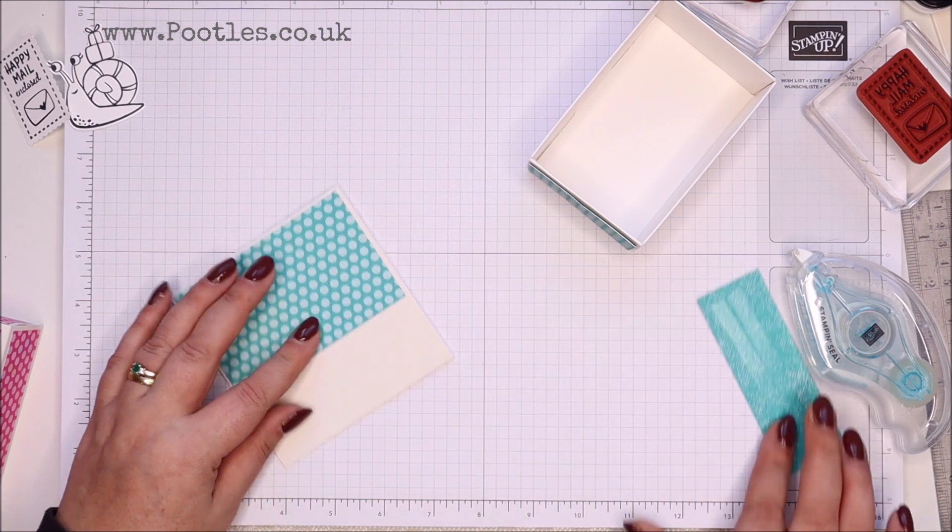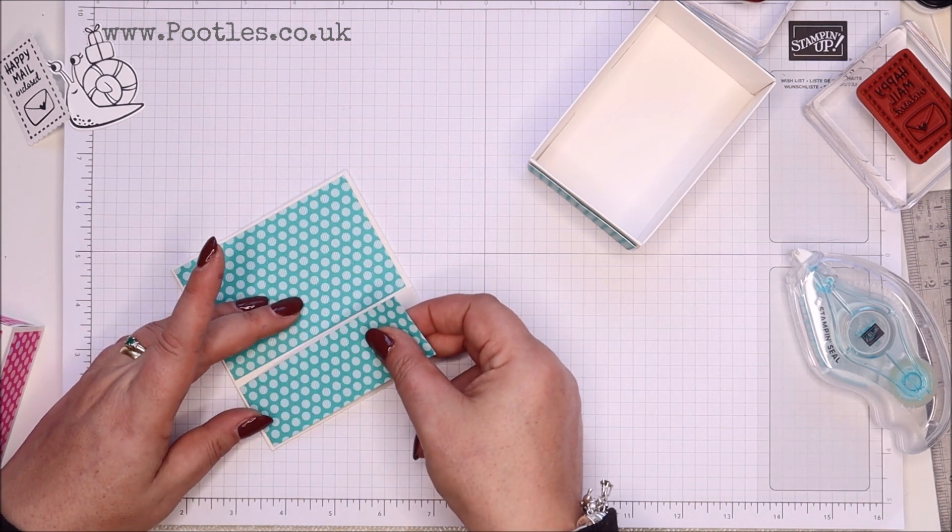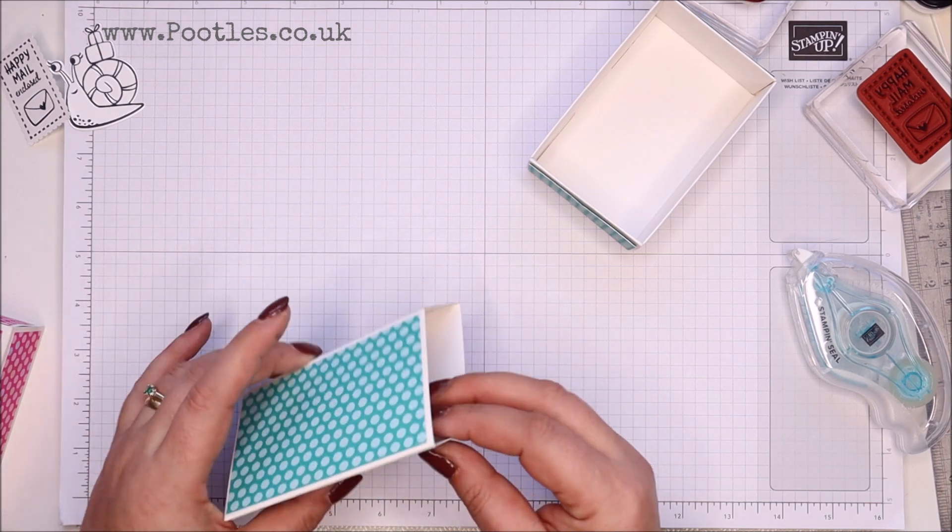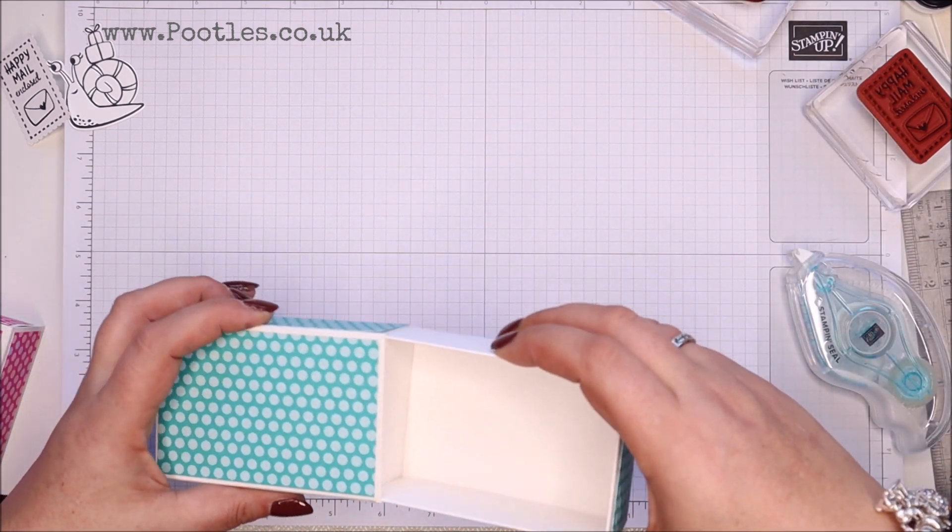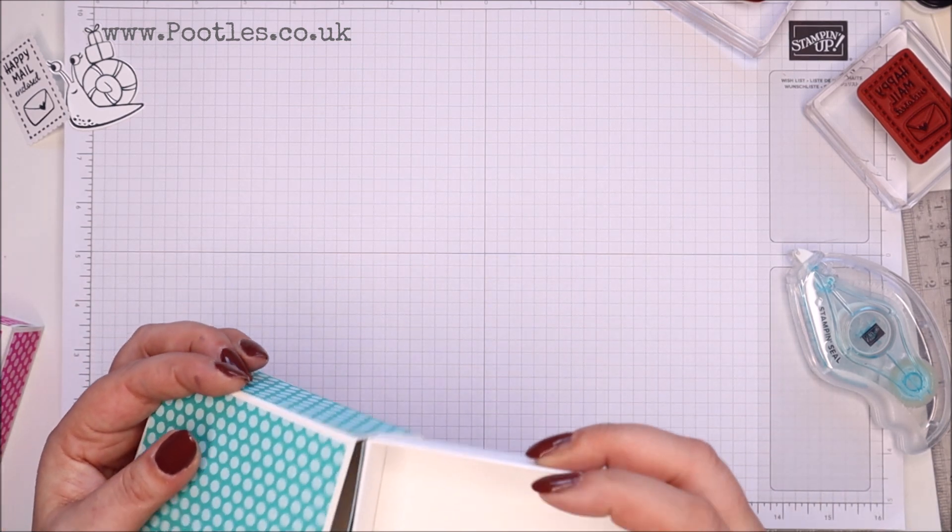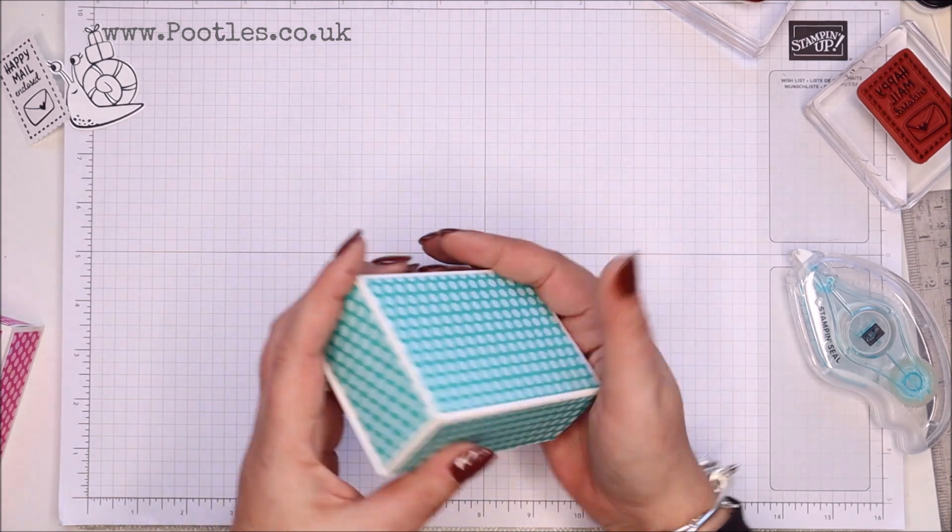Obviously, if you work in Imperial, just measure your box and wrapper in Imperial. And take off about a quarter of an inch. Sorry, an eighth of an inch. Not too much, basically. Just so you get a nice little border. There we go.